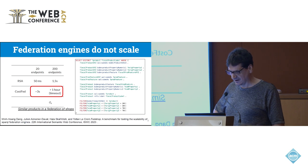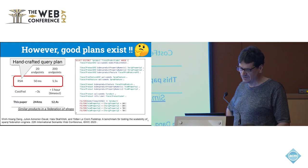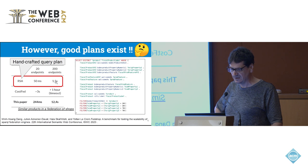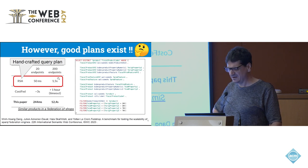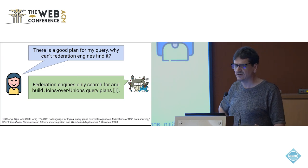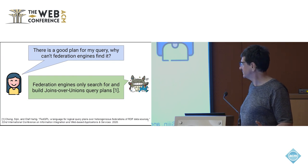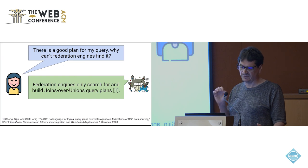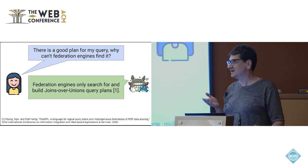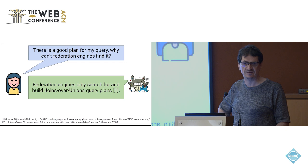It clearly does not scale at all. But what is interesting is that the benchmark also includes RSA Query, which is handcrafted queries. And you see it's possible to execute this query in 1.5 seconds. It means that there exists a good plan for executing the federated query, but the federation engine cannot find it. And the big answer for that is that federation engines only search for join-over-union query plans. And of course, the good plans, the one with 1.5 seconds, does not belong to the search space. That's the main issue.